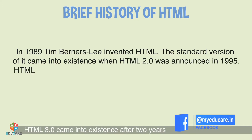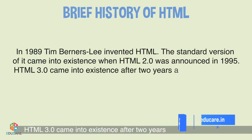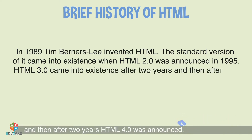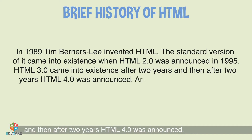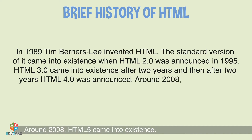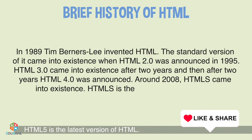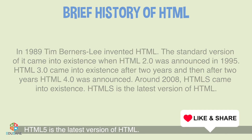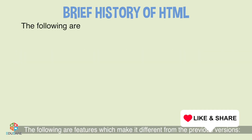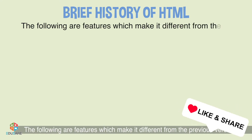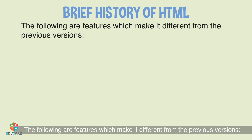The standard version came into existence when HTML 2.0 was announced in 1995. HTML 3.0 came into existence after 2 years, and then after 2 more years HTML 4.0 was announced. Around 2008, HTML 5.0 came into existence and is the latest version of HTML.